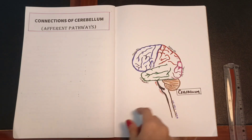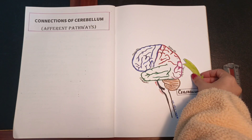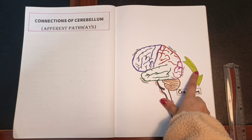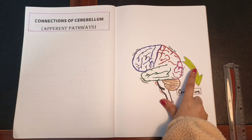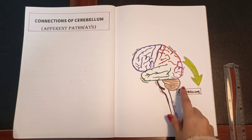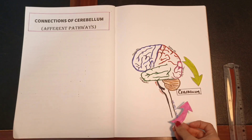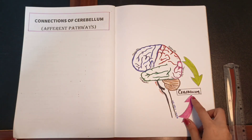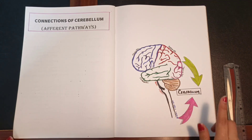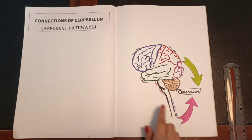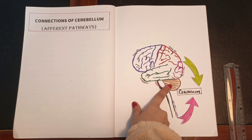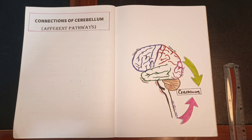The major input to the cerebellum is from the cerebral cortex via three pathways: the corticopontocerebellar pathway, the cerebro-olivo-cerebellar pathway, and the cerebro-reticulo-cerebellar pathway. Three additional afferent pathways come from the spinal cord to the cerebellum: the anterior and posterior spinocerebellar tracts and the cuneocerebellar tract. Apart from that, some input also comes from the vestibular nerve, which sends information from the inner ear to the cerebellum. Let's have a look at these tracts one by one.